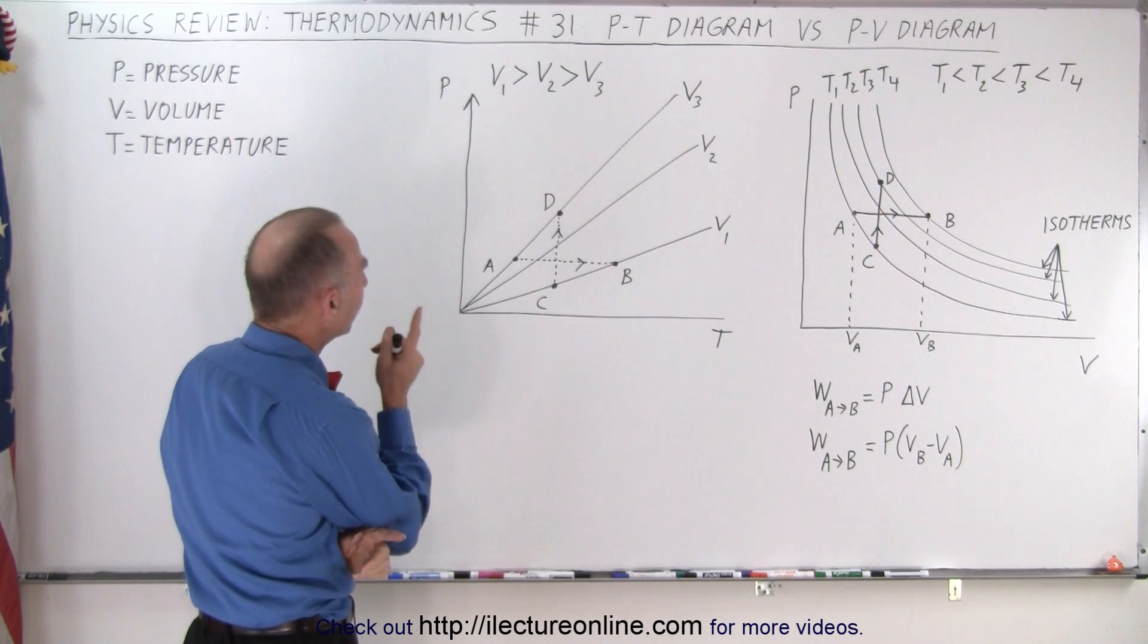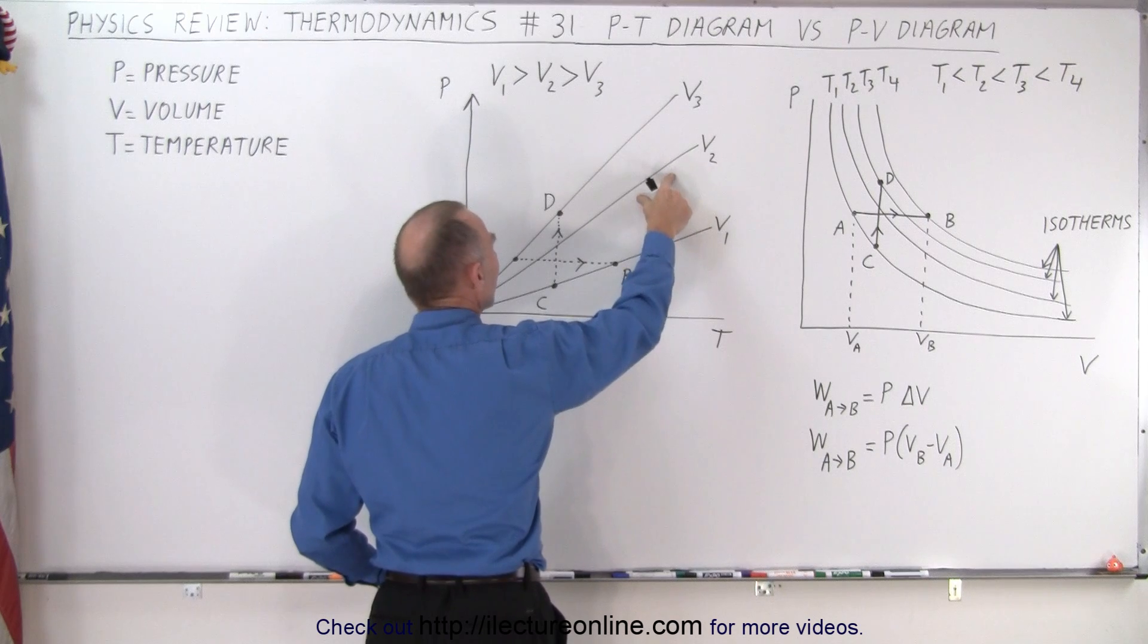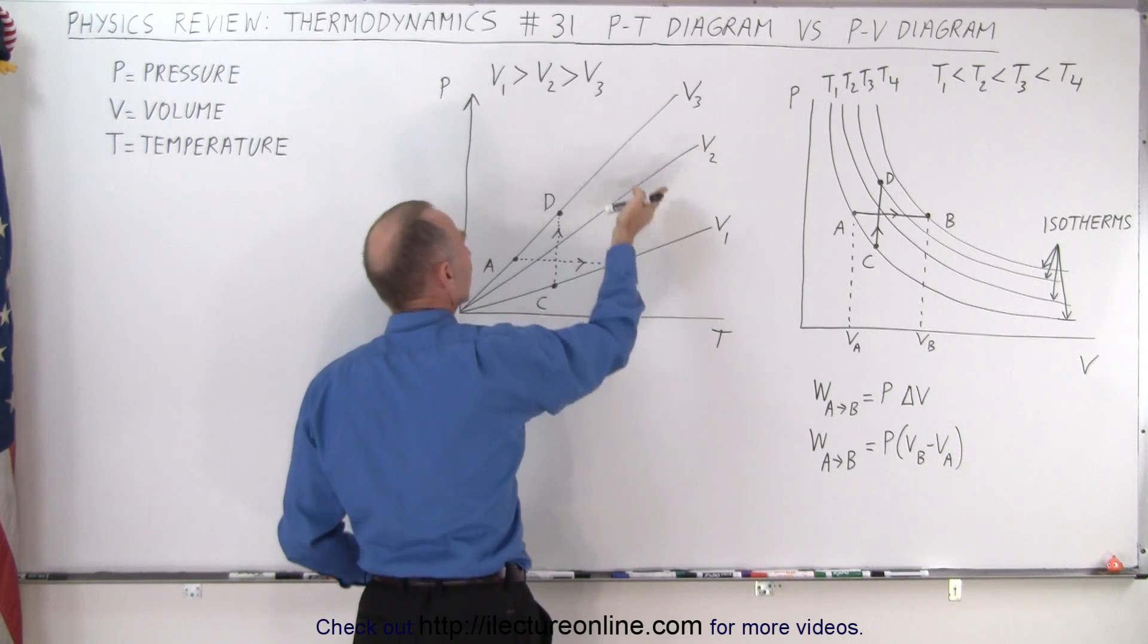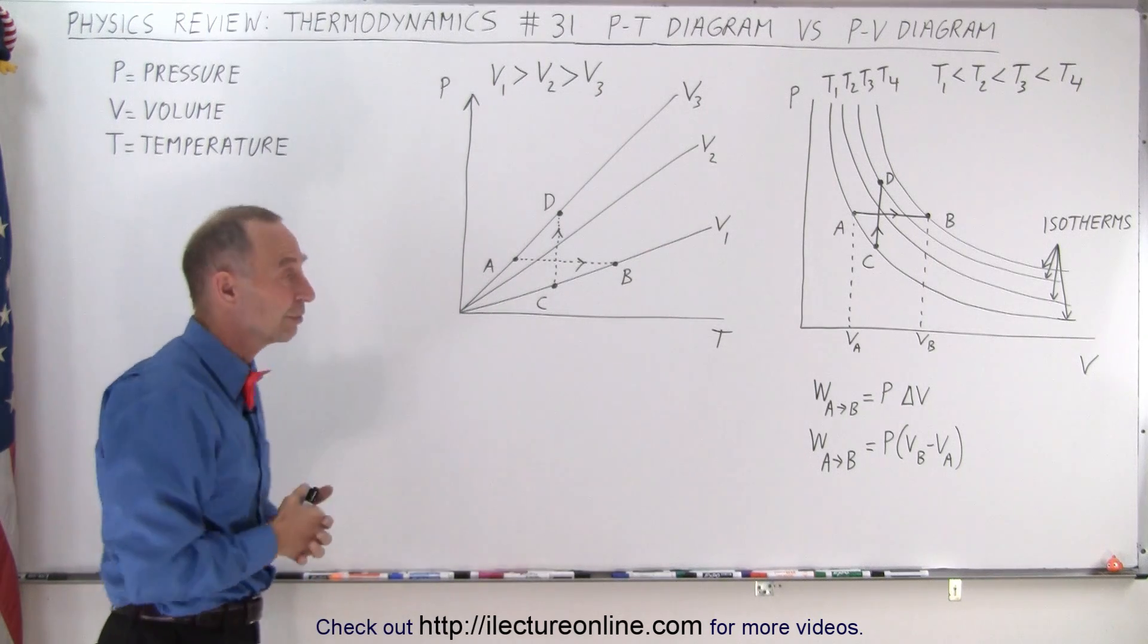Now notice though that V1 represents the highest, the greatest volume. V2 is smaller, and V3 is smaller. So as we go higher up like this at a steeper line, we represent a smaller, smaller, smaller volume.